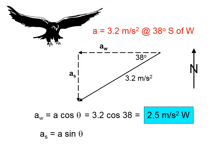And the southerly component is going to be 3.2 times the sine of 38. The southern component of the acceleration is the leg of the triangle that is opposite the angle. 2.0 meters per second south.